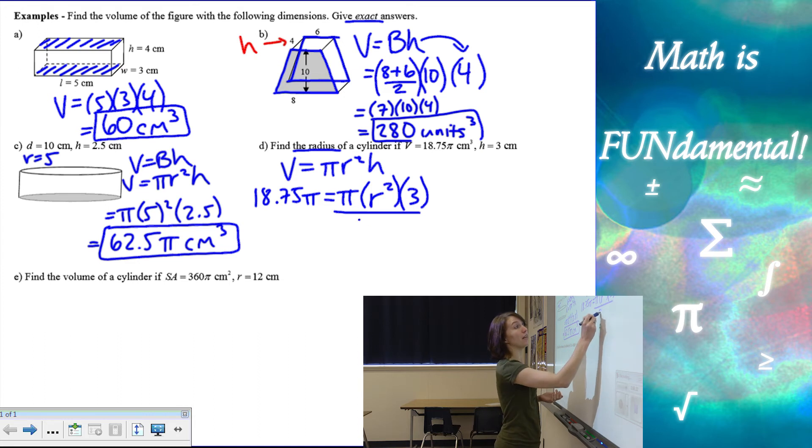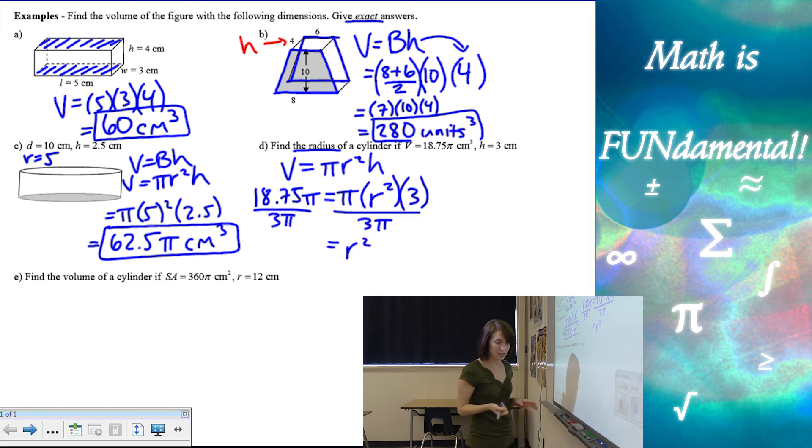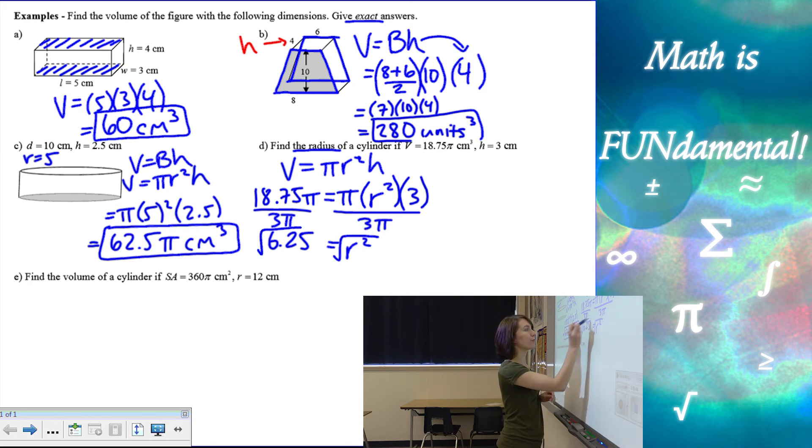First, we can divide by three pi. I'm going to divide both sides by three pi to get r squared by itself. When I do that, I end up with 6.25. The pi's cancel out, which is nice. And then 18.75 divided by three. And then I find the square root of 6.25, which is going to be 2.5. And I'm just doing radius. So my units are just basic centimeters.